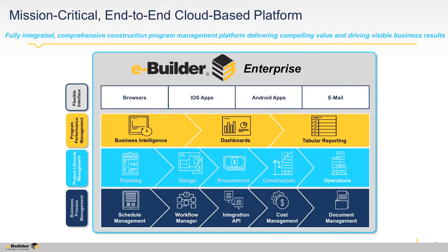There are many features to eBuilder Enterprise, but let me try to break it into four logical groups for you. At the bottom of the screen, you'll find our business process management layer. This is the capabilities that have been designed specifically for construction project management and are unique to facility and asset owners. These features include capabilities such as schedule management, workflow management, integrations, cost management, document management, and many more.